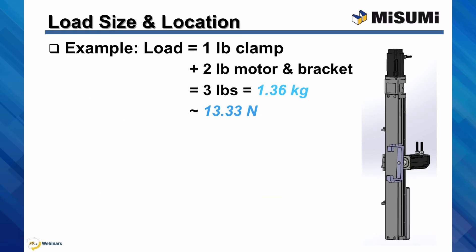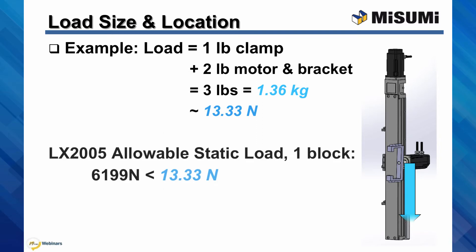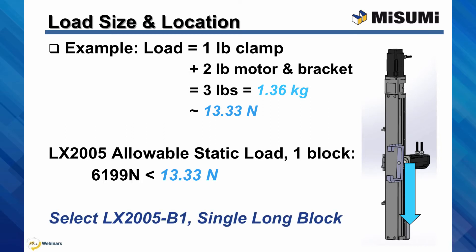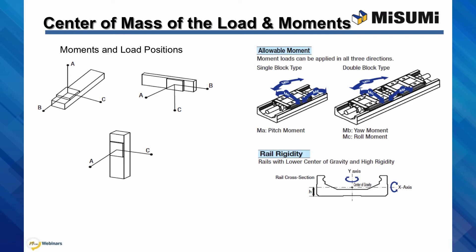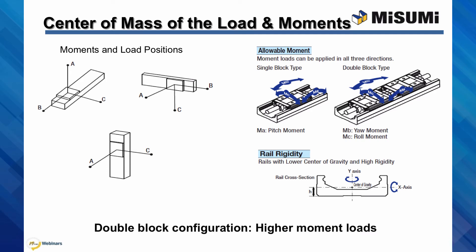The next step is to verify the load size and location. For this example, the clamp is approximately one pound while the motor and bracket are two pounds together. This translates to about 13 newtons, which is well within the nearly 6,200 newton allowable static load for a single long block LX2005-B1. In addition to calculating and comparing the allowable static load, the position of the load plays an important factor in choosing the correct actuator. Overhanging or cantilevered loads can create moments or twisting forces on the carriage of the actuator, calculated by multiplying the force by the distance offset from the actuator axis. If the allowable moment is exceeded, the actuator could suffer damage. Based on the combination of the actuator orientation and the load position, there may be moment loads in as many as three directions.